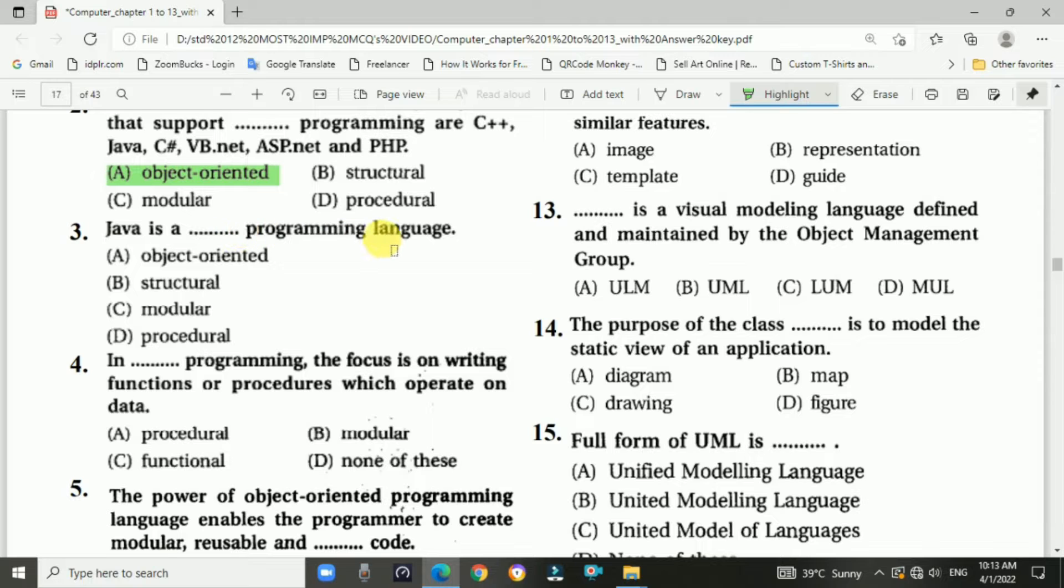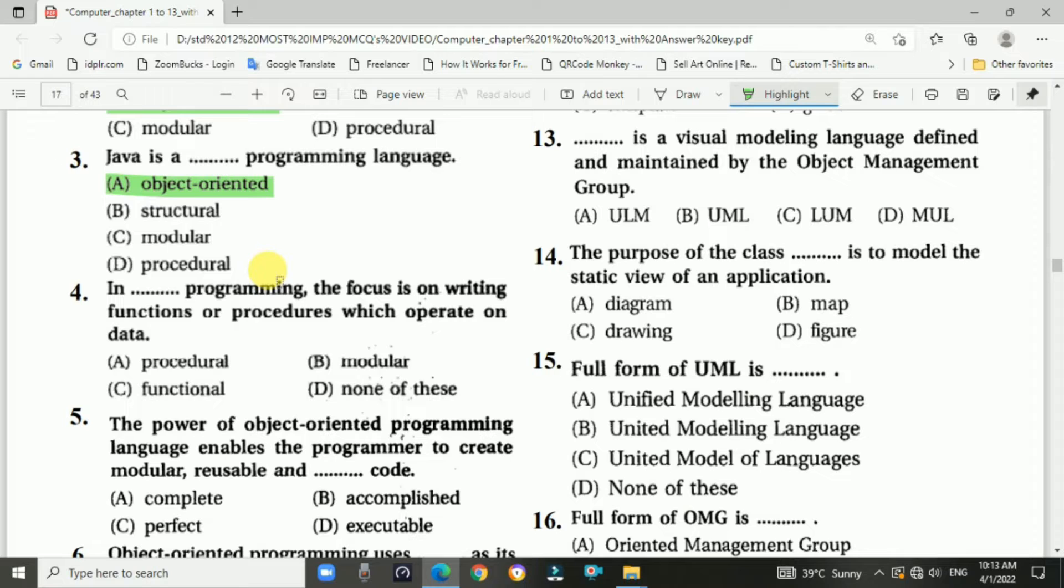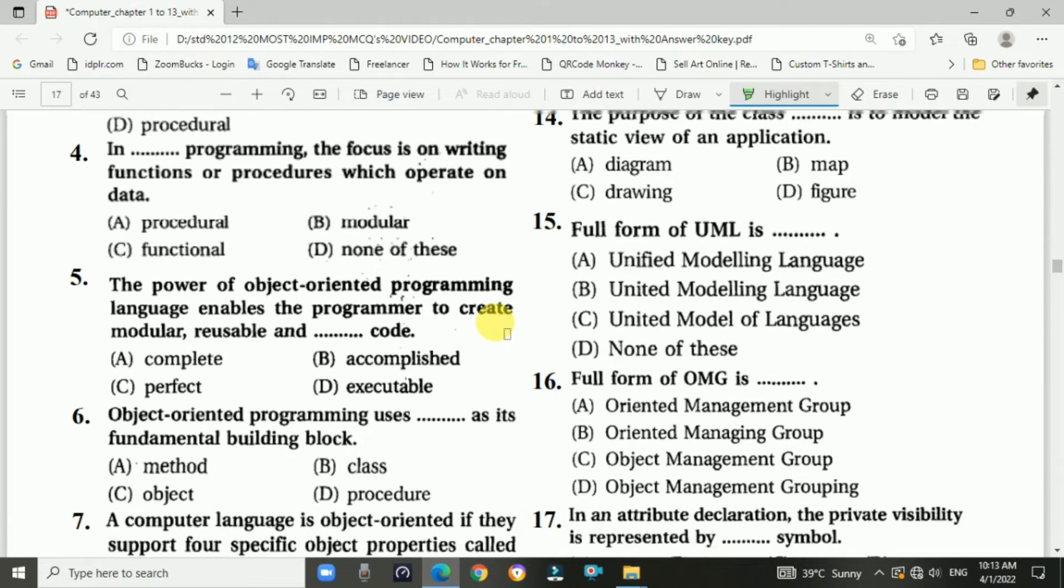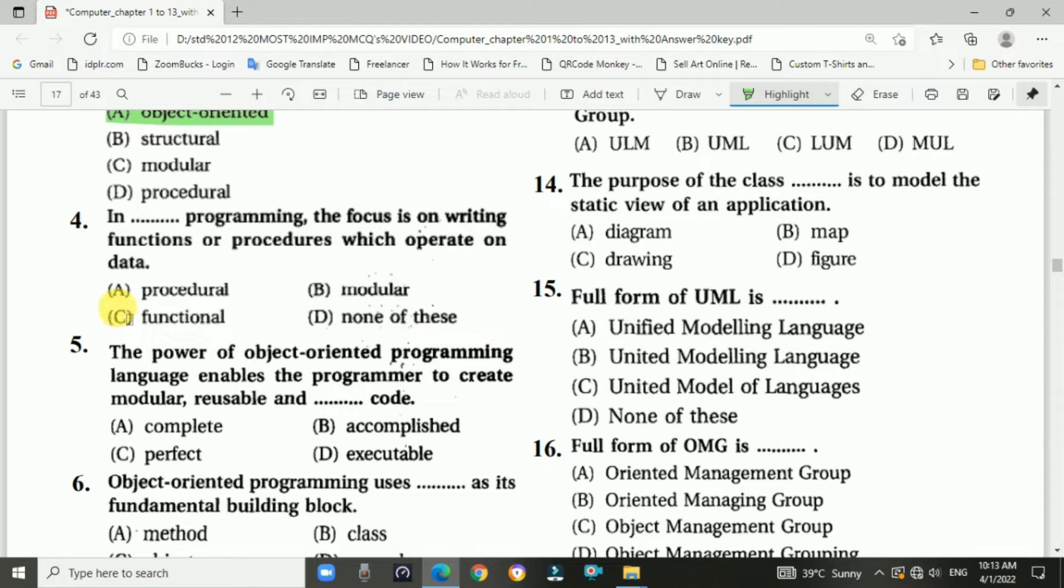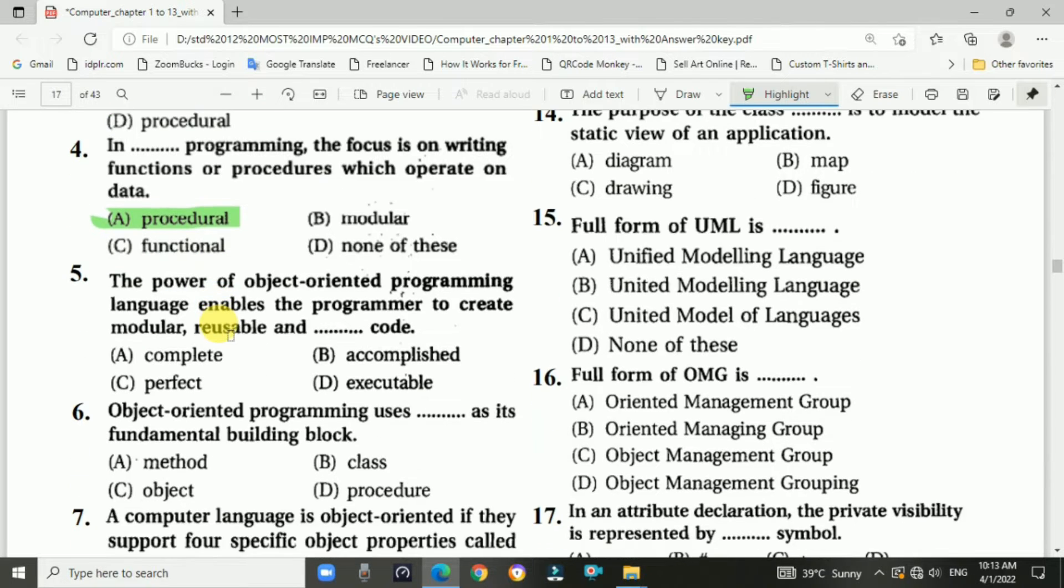Question number three: Java is blank programming language. Option A, object-oriented. Question number four: In blank programming, the focus is on writing functions or procedures which operate on data. Answer is procedural programming.